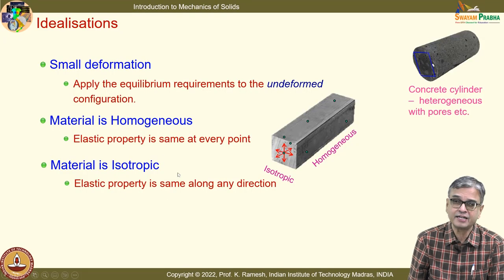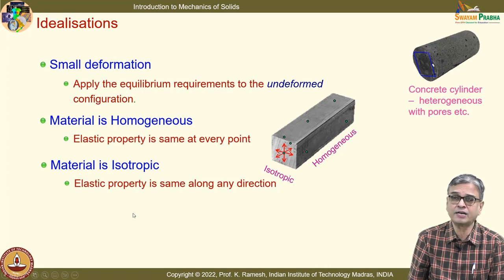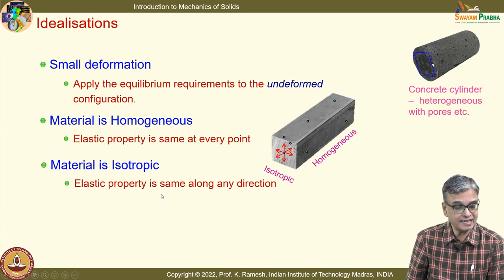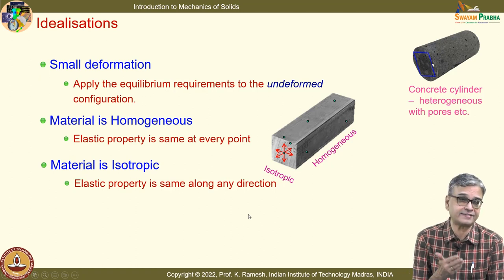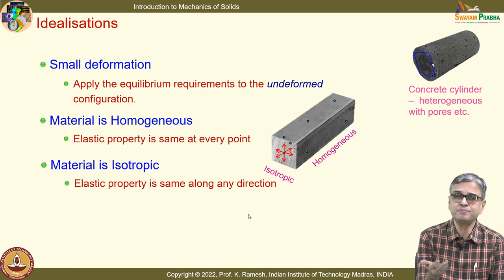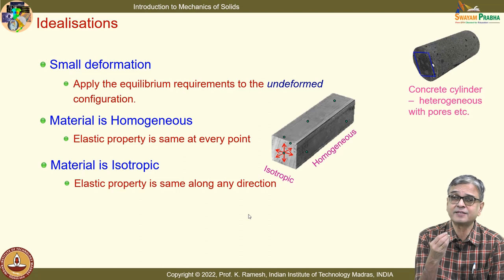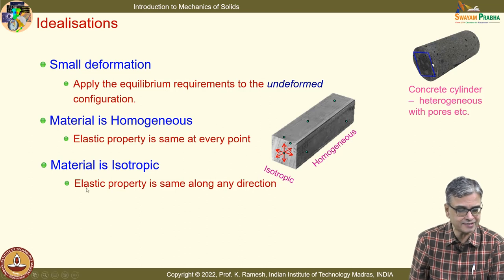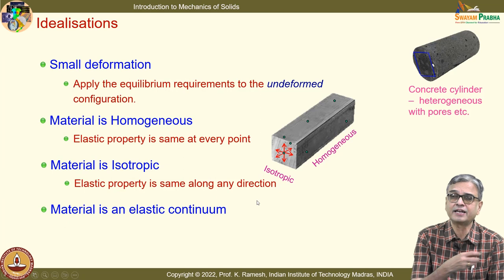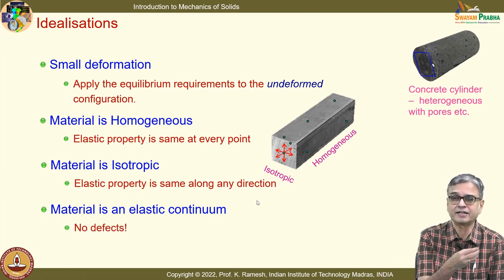We also made the important idealization that material is isotropic — elastic property is the same along any direction. A simple metal processing process like extrusion introduces alignment of grains, disturbing isotropy toward orthotropy to an extent. But we close our eyes and say it is easier to develop the mathematics if we consider this as isotropic, then do a tension test along the fiber direction — where the grain is elongated — and use that as the property for predicting failure.